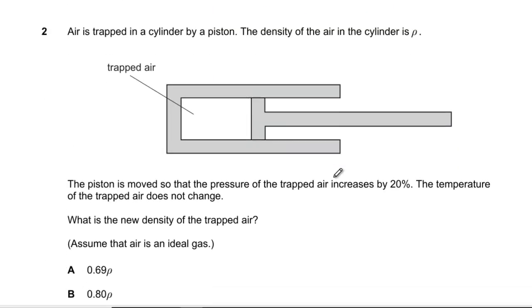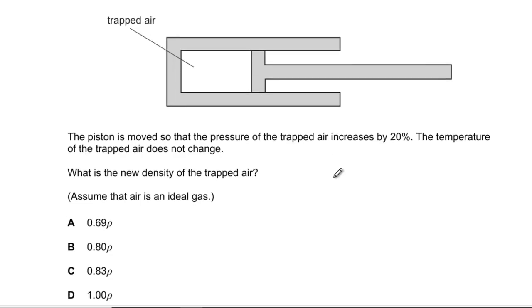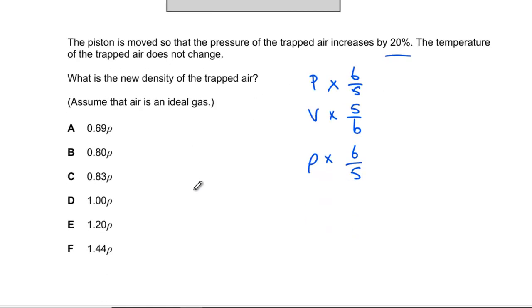Question 2: We've got air in a piston with density ρ. We increase the pressure by 20%, temperature doesn't change, what's the new density? The pressure is times 6/5, temperature doesn't change, so our volume's got to be times 5/6 to keep PV constant, which means our density would be times 6/5 because we divide by the volume. So we're going to be at 1.2, which is E.